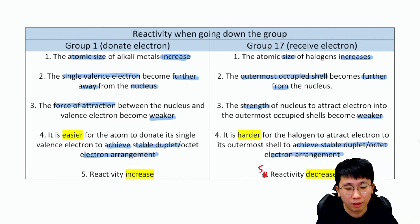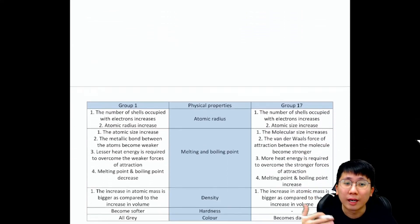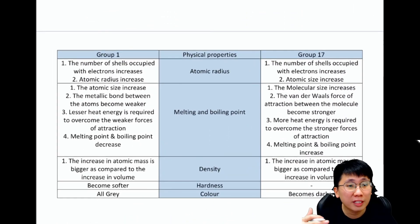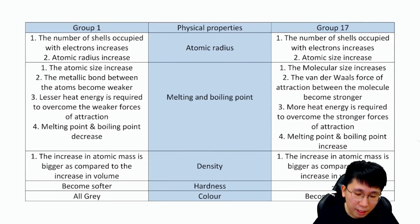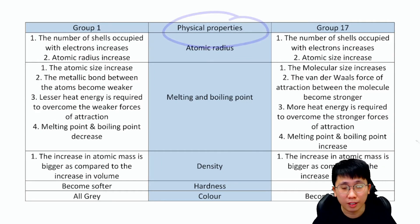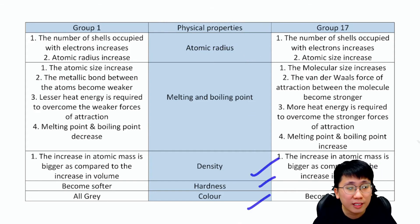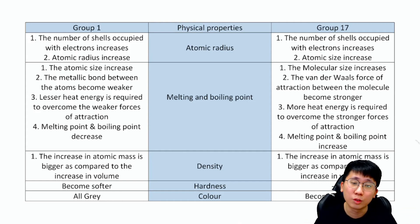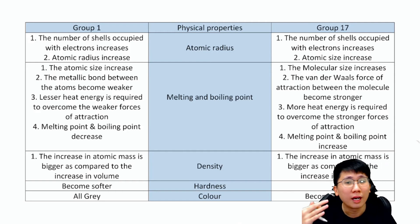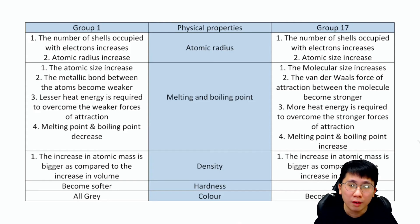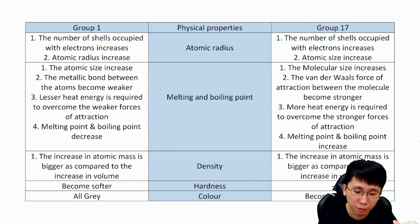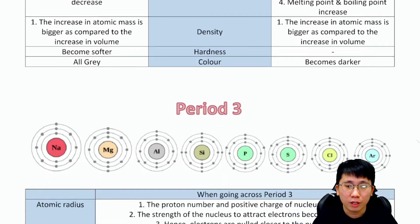On the next page you'll find physical properties differences between Group 1 and Group 17, covering atomic radius, melting and boiling point, density, hardness, and colors. These are relatively straightforward since the exam just asks you to list three physical properties of a given group. The melting point and boiling point trend is very commonly tested, so put a star on that.